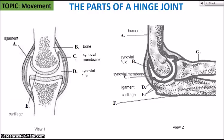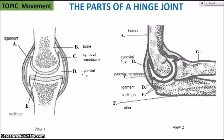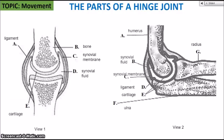F and G are the two lower arm bones. F would be the ulna, the larger of the two bones — this is what forms the point of the elbow at the elbow joint. And G is the radius. That completes the parts of the hinge joint that you should know about.